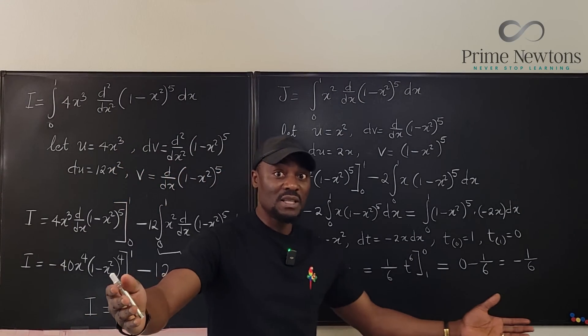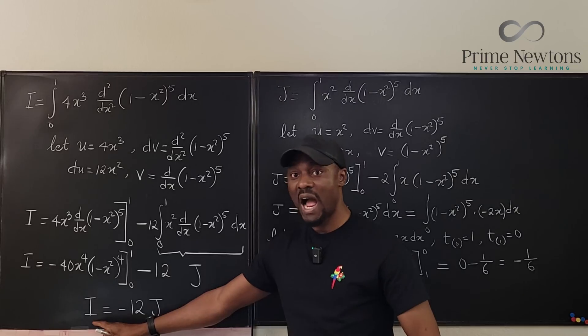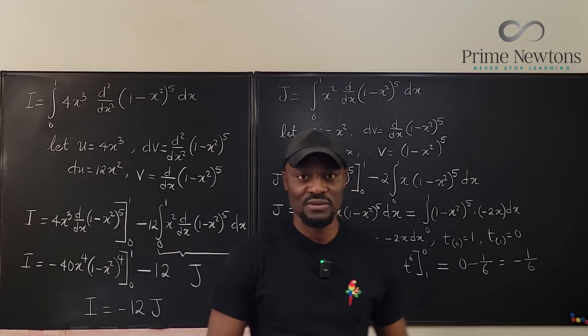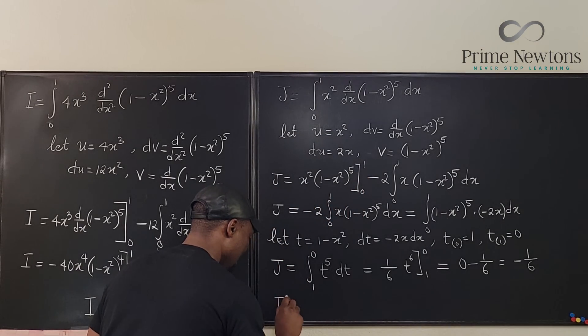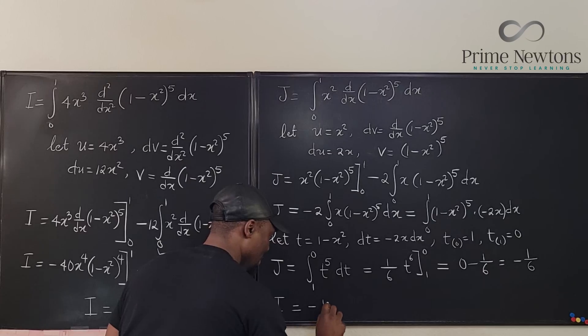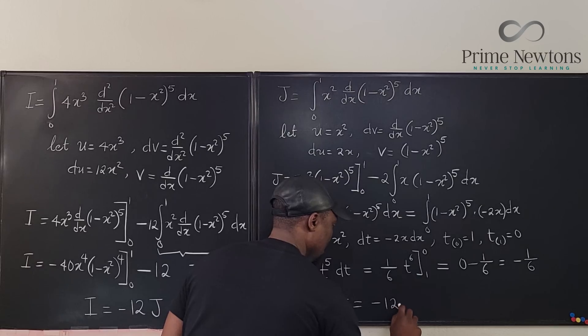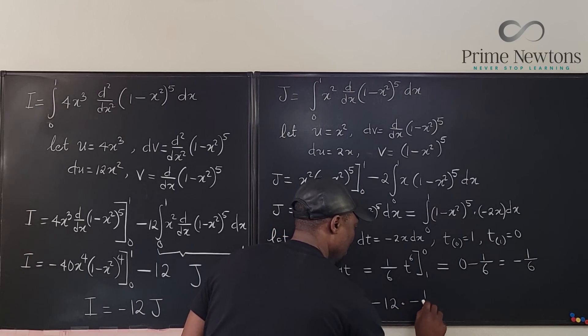But what are we looking for? We're looking for I. I is negative 12J. I equals negative 12J which is negative 12 times negative 1 over 6.